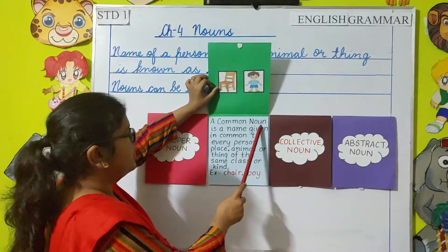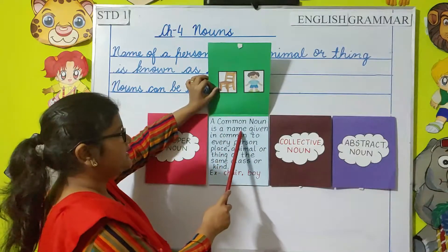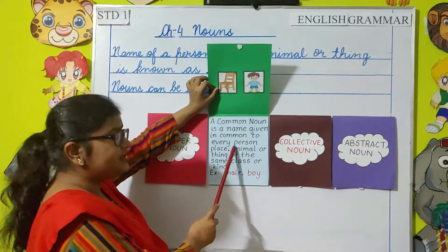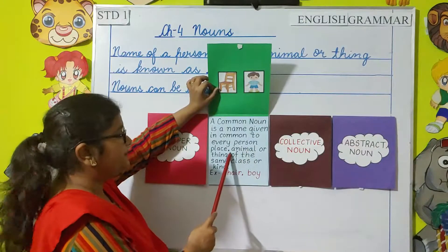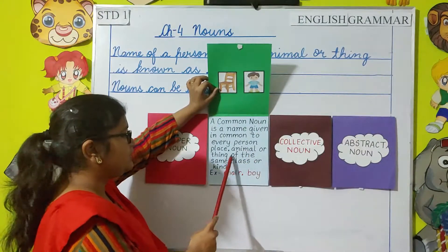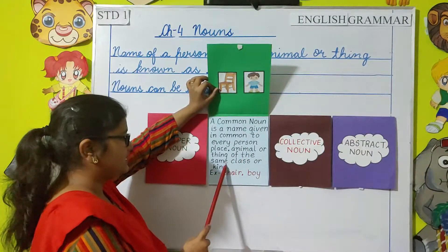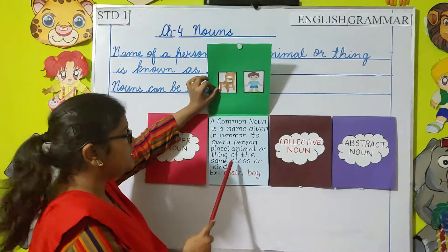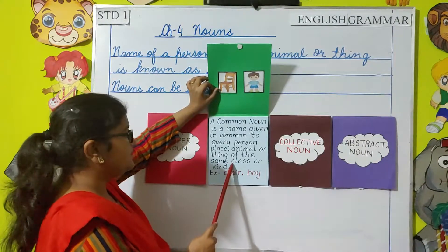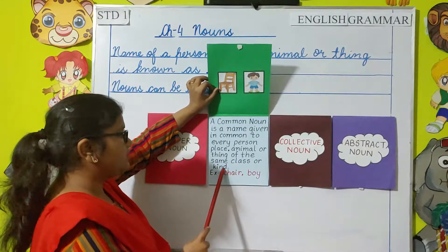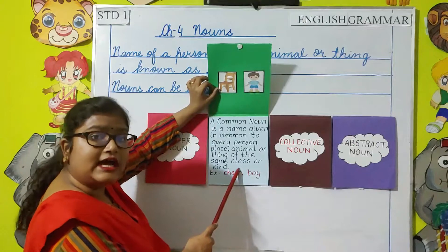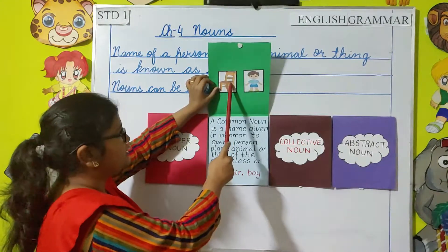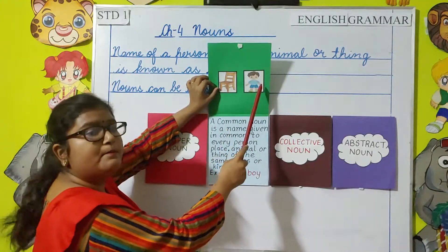Next, common noun. A common noun is a name given in common to every person, place, animal, or thing of the same class or kind. So this is a common name given to a person, animal, place, or thing of the same class type. For example, chair, boy.